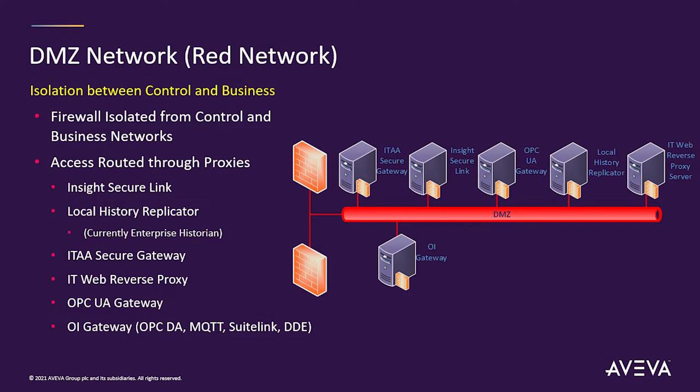There should be a DMZ on top of the process control network — that's what my process control network talks to, not directly to the business network. I can put all the interfaces I want other people to use in the DMZ: they can get into the DMZ but not into the process control network. A properly designed OT environment should not have the internet on the other side of a single firewall. There should be multiple firewalls — NERC CIP even says two different firewalls made by two different vendors, so if someone breaks into one you can protect against them getting all the way through.